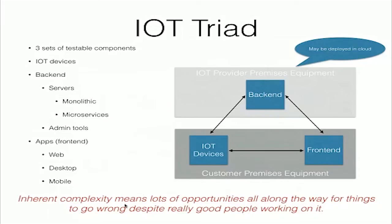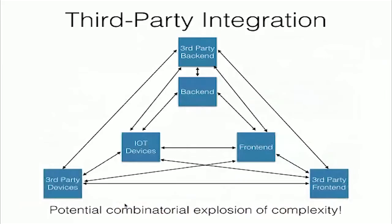What if you have some third-party integration? Maybe your back end talks to some third-party back end, maybe your IoT devices talk to third-party devices or third-party back ends, maybe your front ends are talking — and all of a sudden we have this potential combinatorial explosion of complexity. So a lot of things that can go wrong.